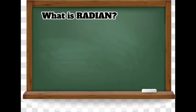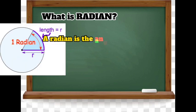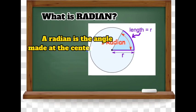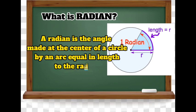Let us define what is radian. A radian is the angle made at the center of a circle by an arc equal in length to the radius.